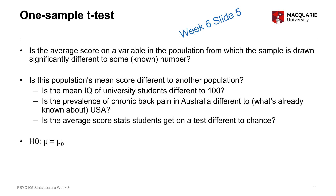The null hypothesis for the one sample t-test is that mu equals mu zero, mu zero being our test value. The alternate hypothesis is that mu doesn't equal mu zero — our mean score is not equal to the test value. The variables relevant for the one sample t-test are a single numeric, quantitative variable — not categorical.